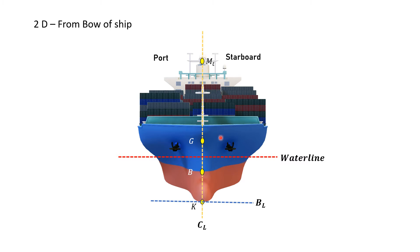For example, if the center of gravity of the ship is such that it is concentrated in the superstructure, then the center of gravity will move upward and comes to the point where my pointer is placed. Then this is the negative GM, and this would also cause an angle of list in the ship. We will discuss this further in the video.